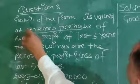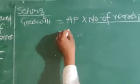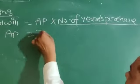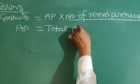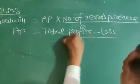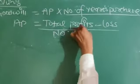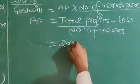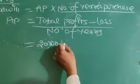Three years purchase. Average profit equals total profits minus loss divided by number of years. Total profit comes to 20,000 plus